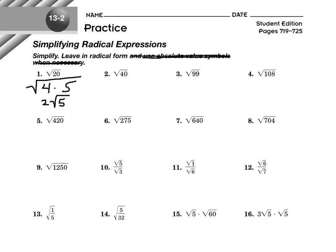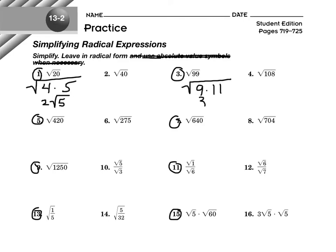All right, let's do odds: 1, 3, 5, 7, 9, 11, 13, and 15. How about square root of 99? That's an easy one. 99 is 9 times 11. I can take the square root of 9, but I can't take the square root of 11, so the answer is 3 root 11.